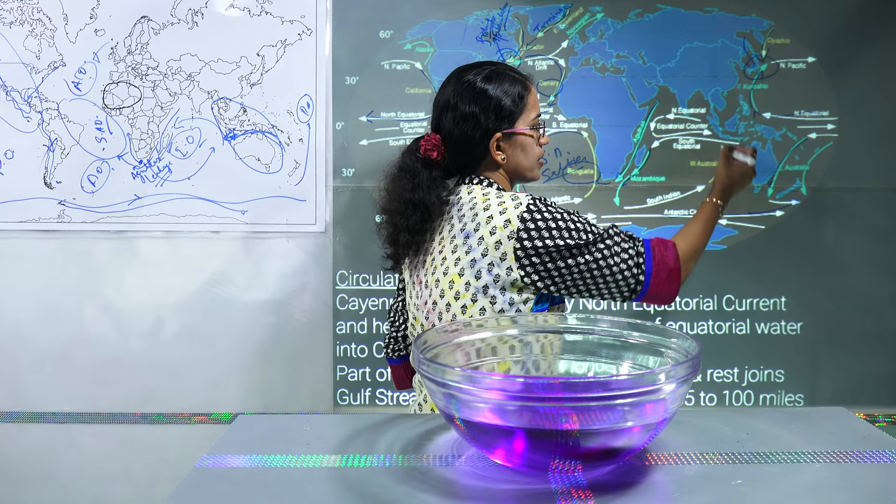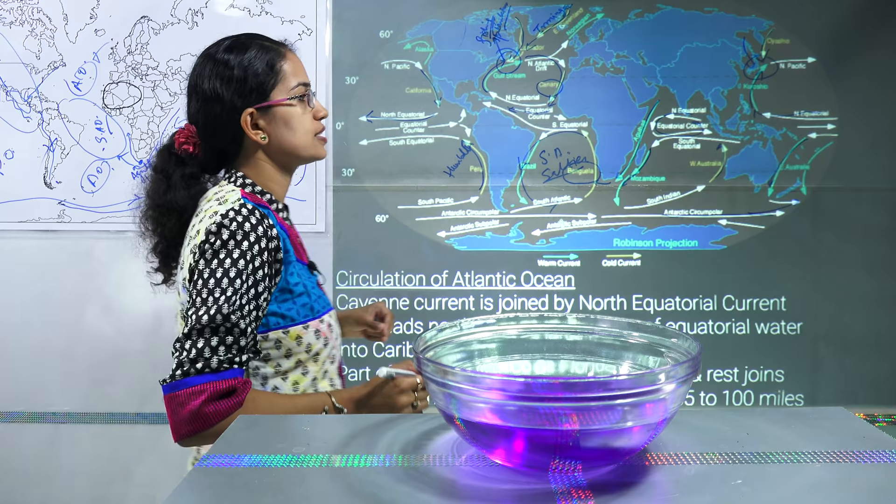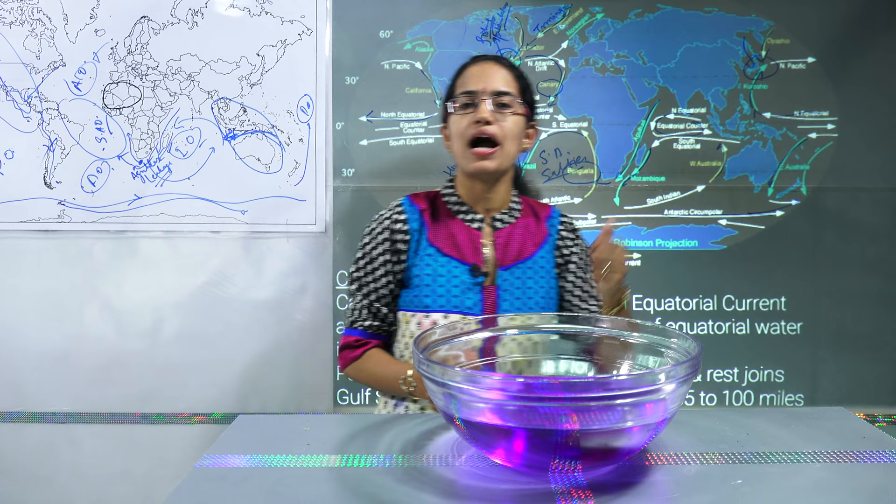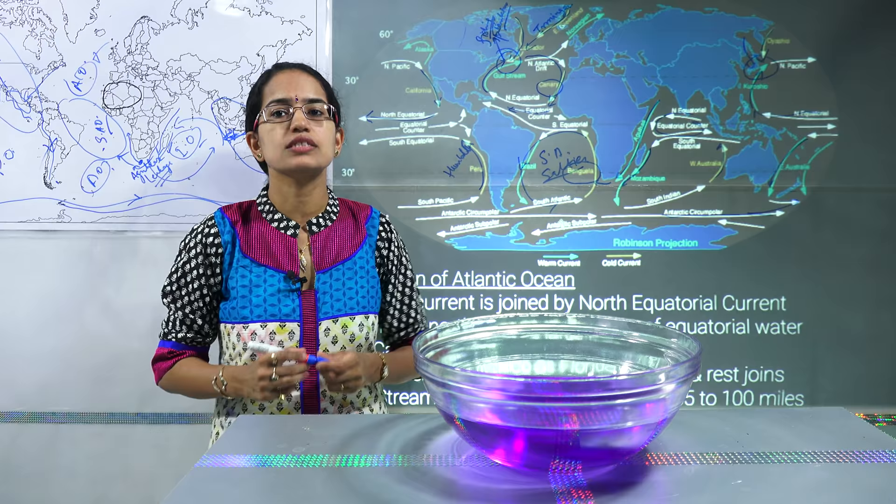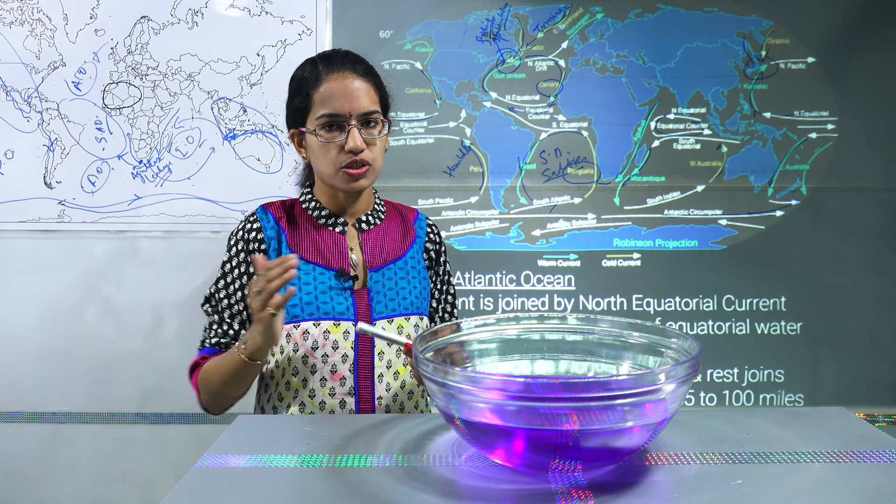And then you have the North Indian Ocean circulation. The North Indian Ocean circulation is interesting because it is affected by the monsoon winds — specifically the seasonal reversal of monsoon winds, the southwest monsoons and the northeast monsoons — which we would discuss more in the chapters on climatology.